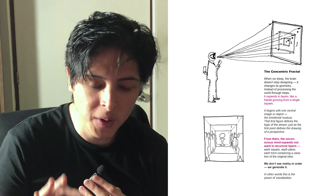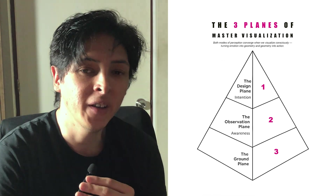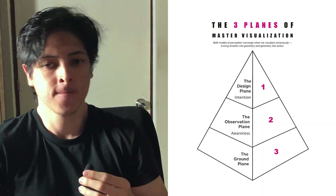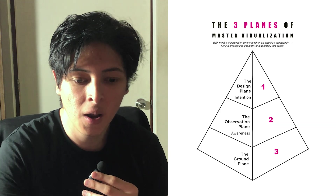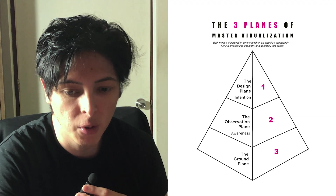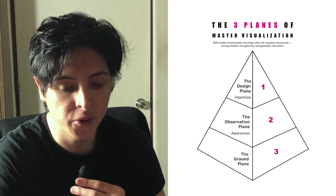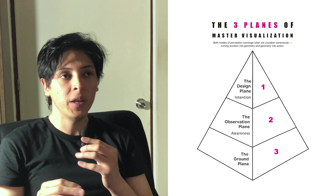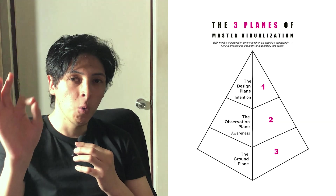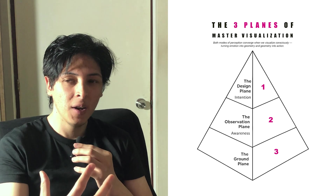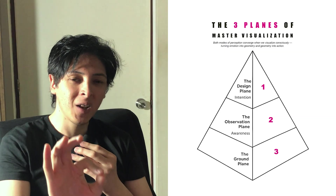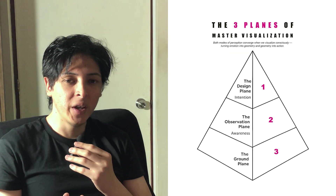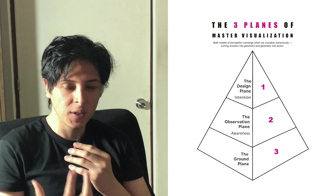Finally, we can understand how to visualize and decode one image of your mind. We can decode the three planes of master visualization. All models of perception converge when we visualize consciously, turning emotion into geometry and geometry into action. When we understand how to decode perception and visual field while awake, and when we are dreaming or sleeping — decoding in different concentric frames — we can understand how to visualize at different planes of consciousness.